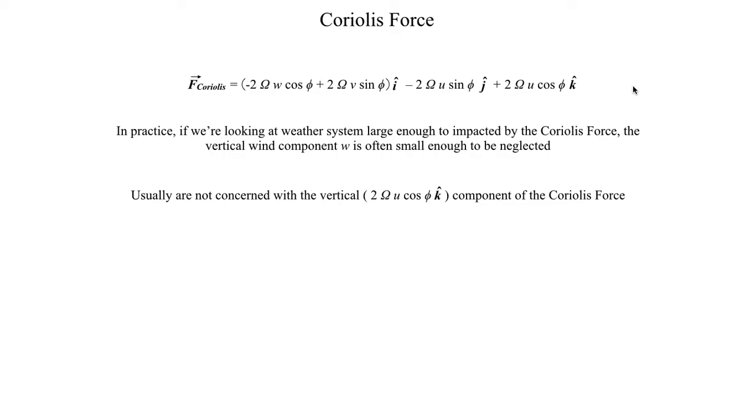So if we apply those two simplifications, we get an expression that's a lot easier to work with. And another thing you'll see to simplify this even further is what's referred to as the Coriolis parameter, which is given by this lowercase f, and that's defined as 2 times omega, again omega is the Earth's angular velocity, times the sine of the latitude that we're at.